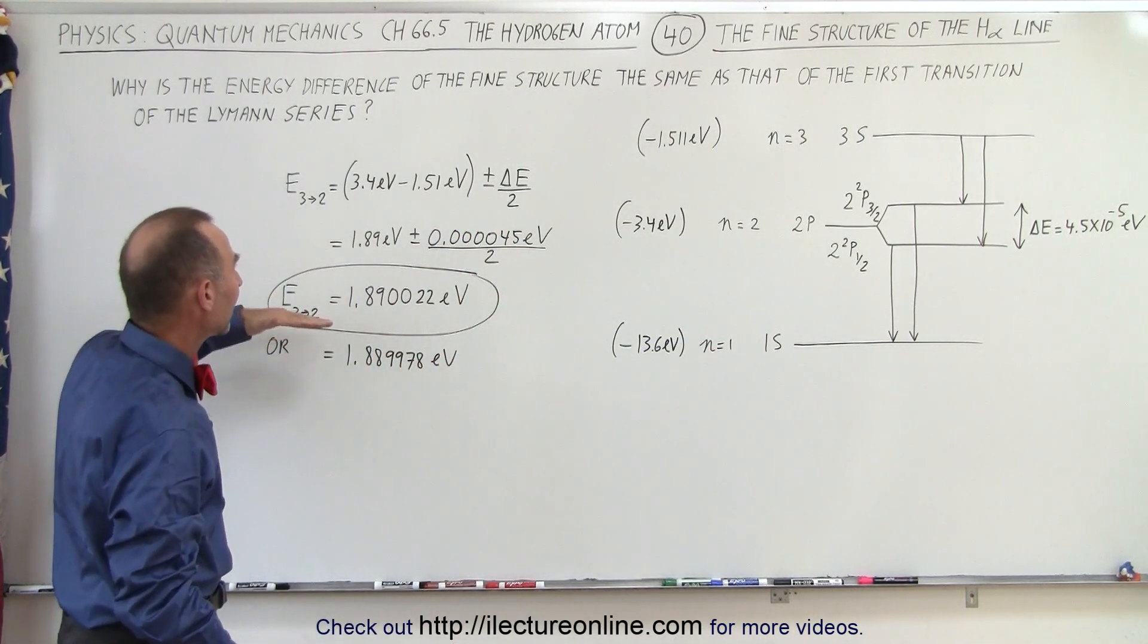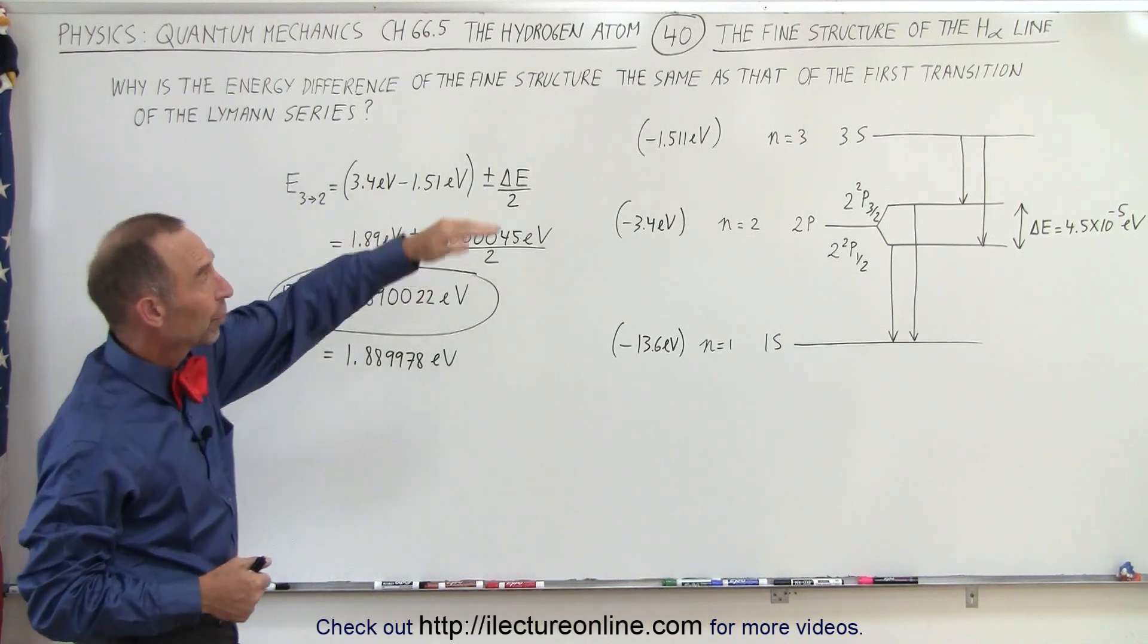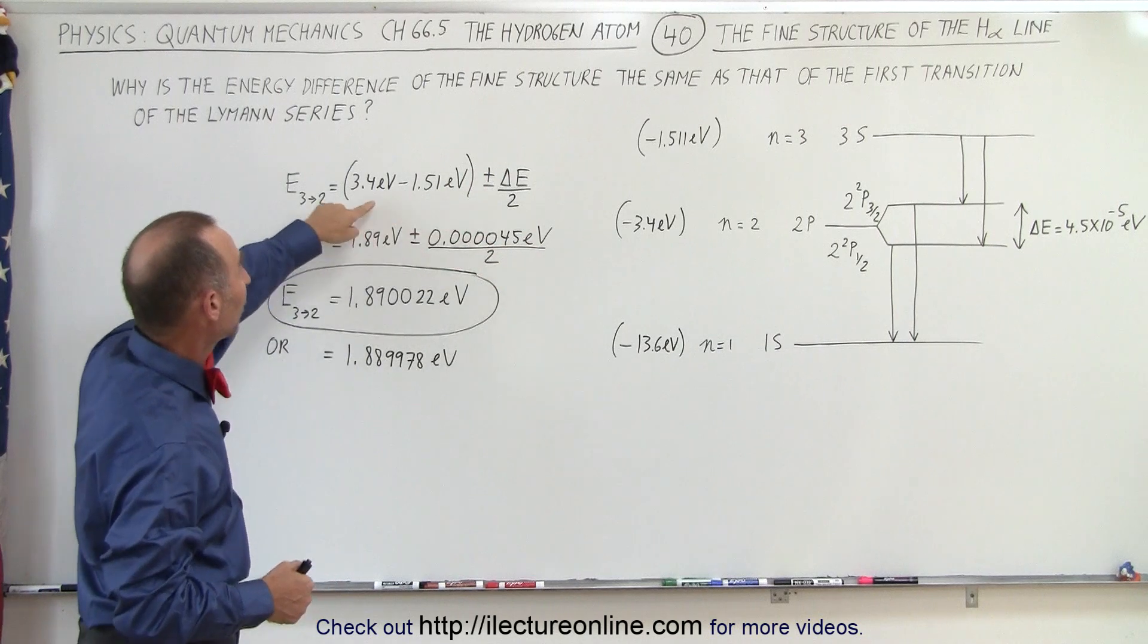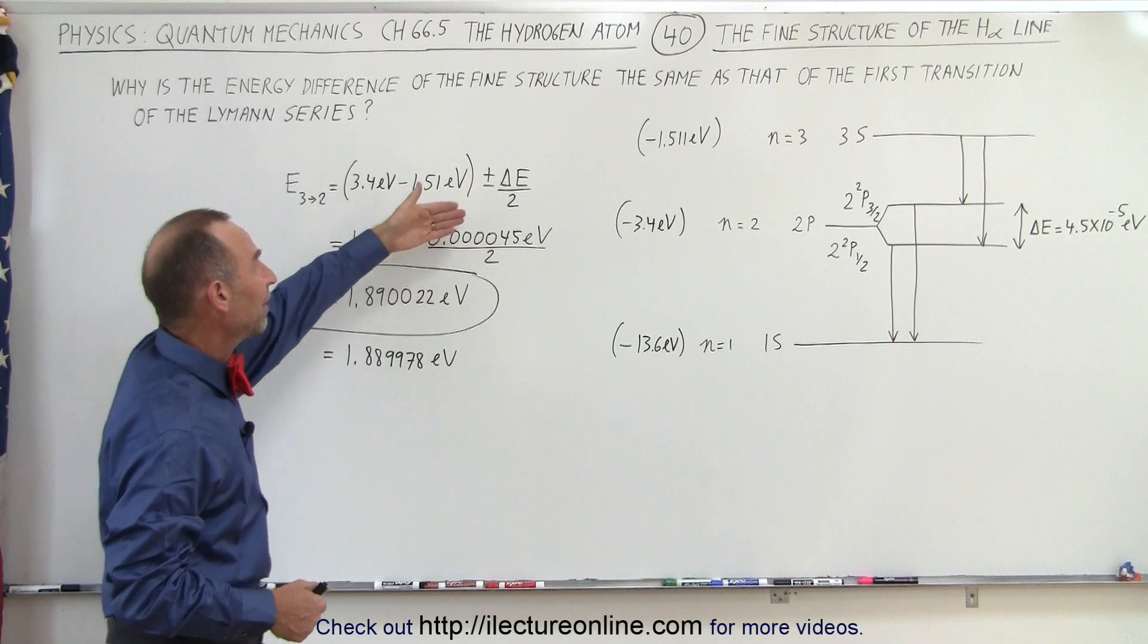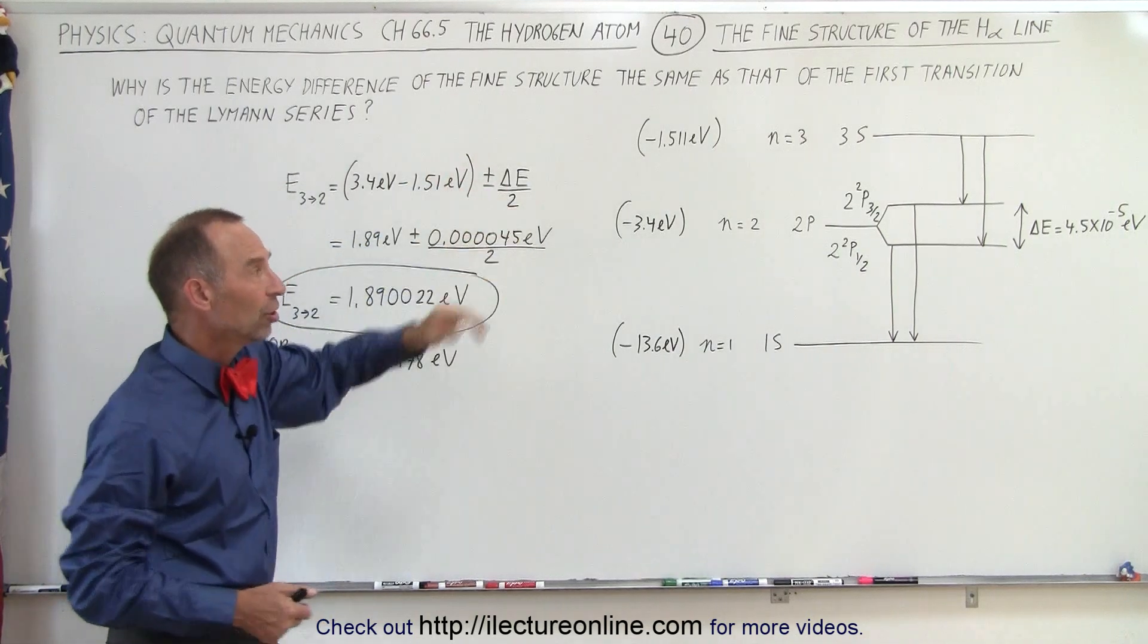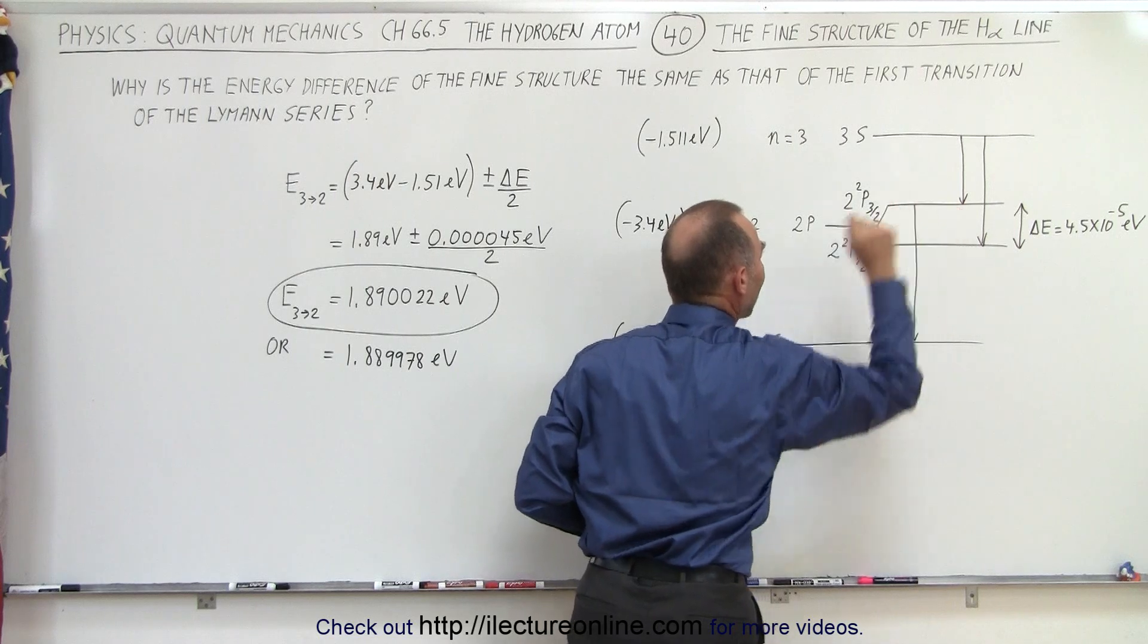When we see how that affects the change in the energy of the jump typically from going from the third level down to the second level we have an energy difference between 3.4 and 1.51 electron volts. But then we have to add the change caused by the fine structure either there's an increase or a decrease of half that much.